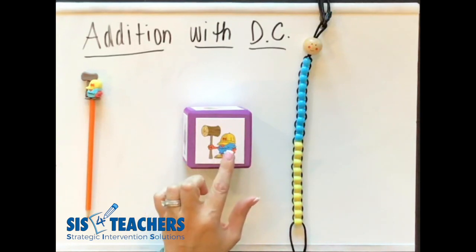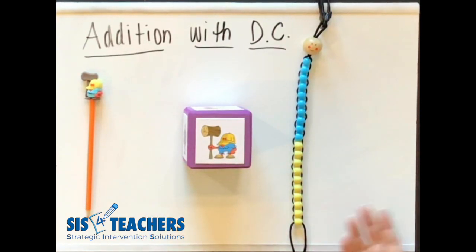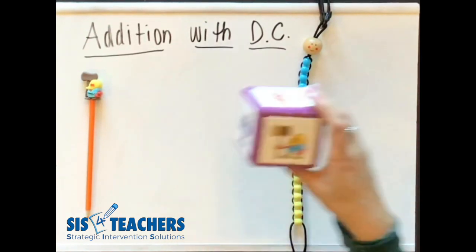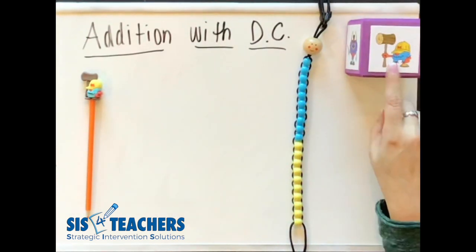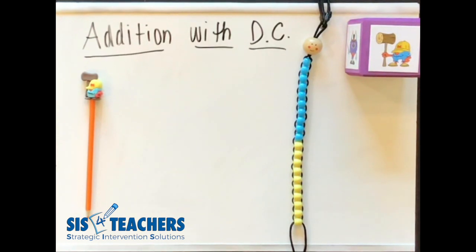When we look at some addition problems, DC will look to see if it has a 10 or maybe as it gets older, might look for a decade number or even a friendlier number. Our website at sisforteachers.org has a great animated video to show you the variety of strategies that DC is able to do.